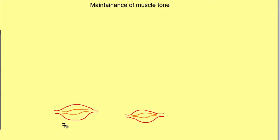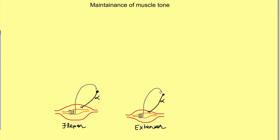We have to see it in both the flexor muscle and extensor muscle. Skeletal muscle has intrafusal fibers and extrafusal fibers, where extrafusal fibers are supplied by alpha motor neurons and contract when there is stimulation of the alpha motor neuron. The intrafusal muscle fiber is sensory — there are sensory nerve endings from intrafusal muscle fibers which reach the spinal cord and connect with the alpha motor neuron.